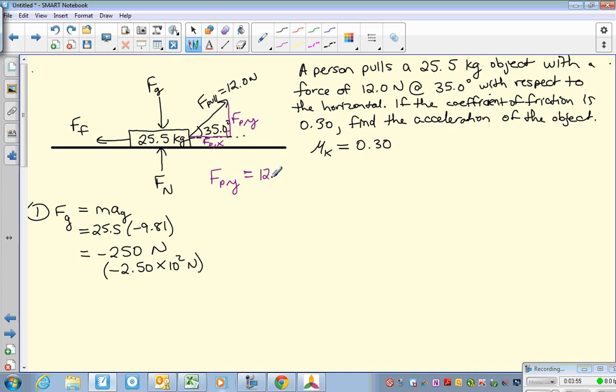So that's going to be 12 sine 35, and the x direction is going to be using cosine because it's the adjacent. So putting those in your calculator, again three significant figures: 12 sine 35 is 6.88, and then 12 cosine 35 is 9.83.